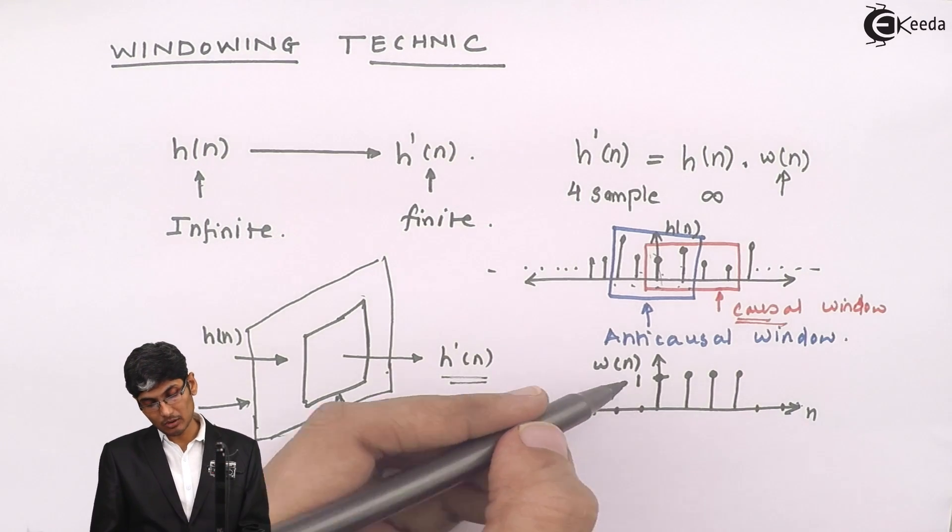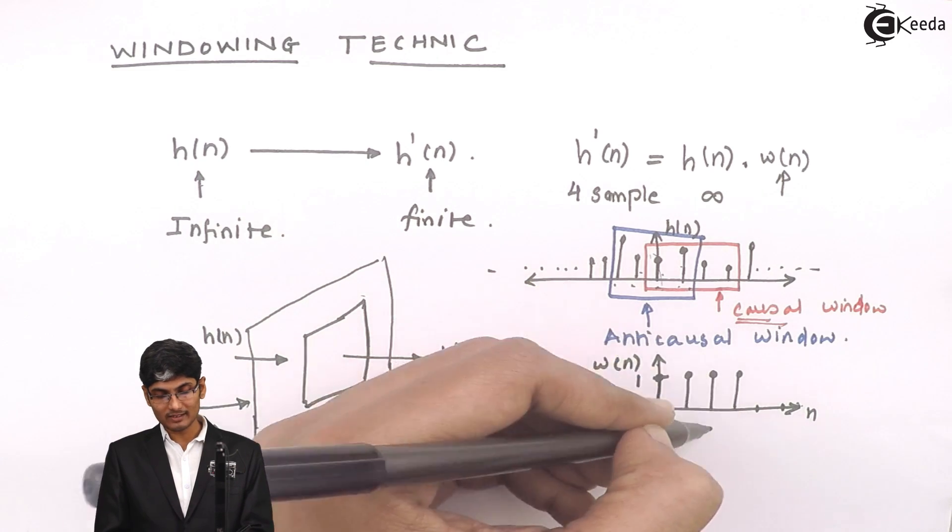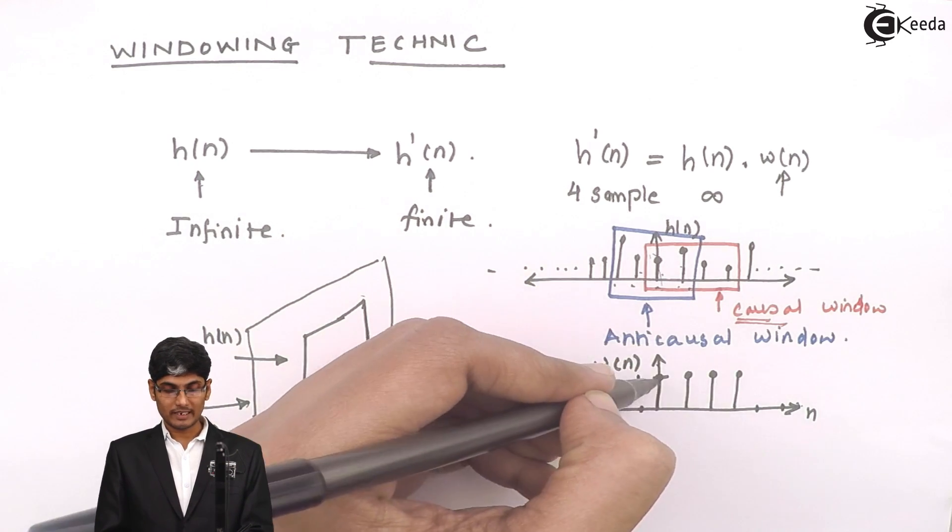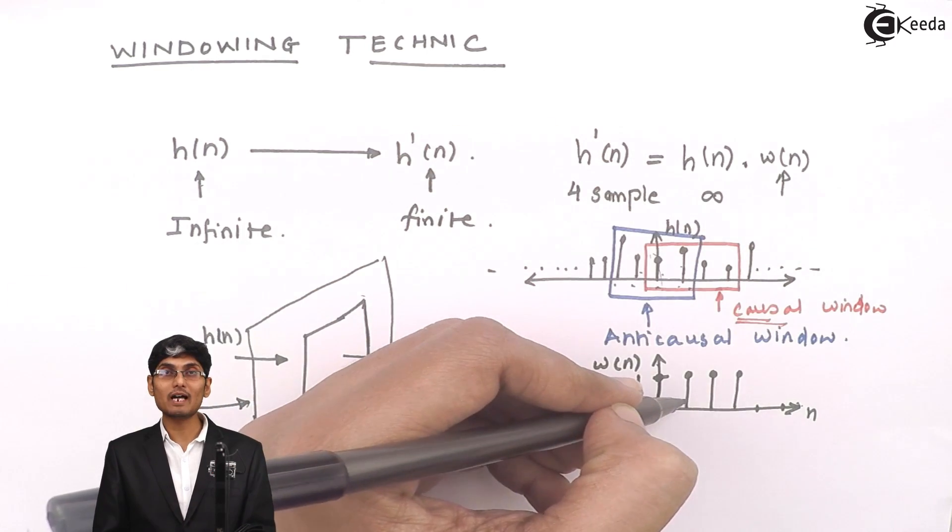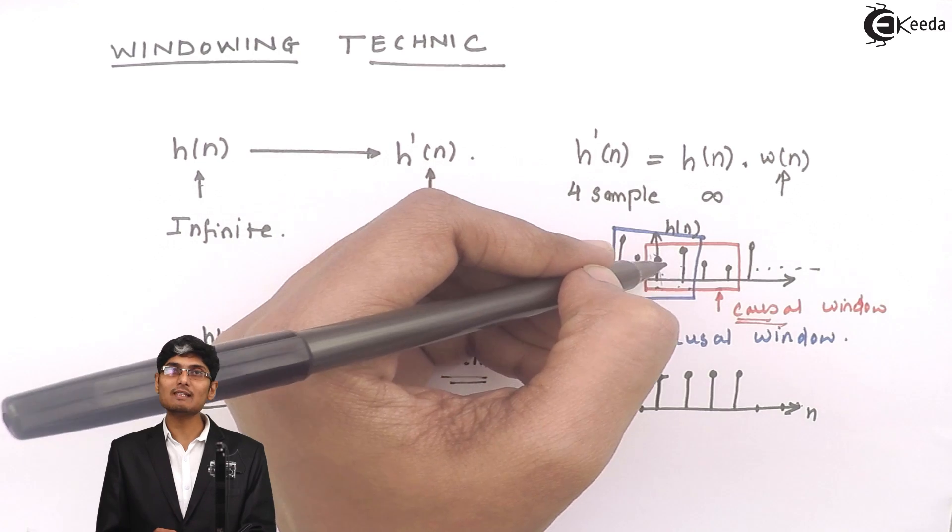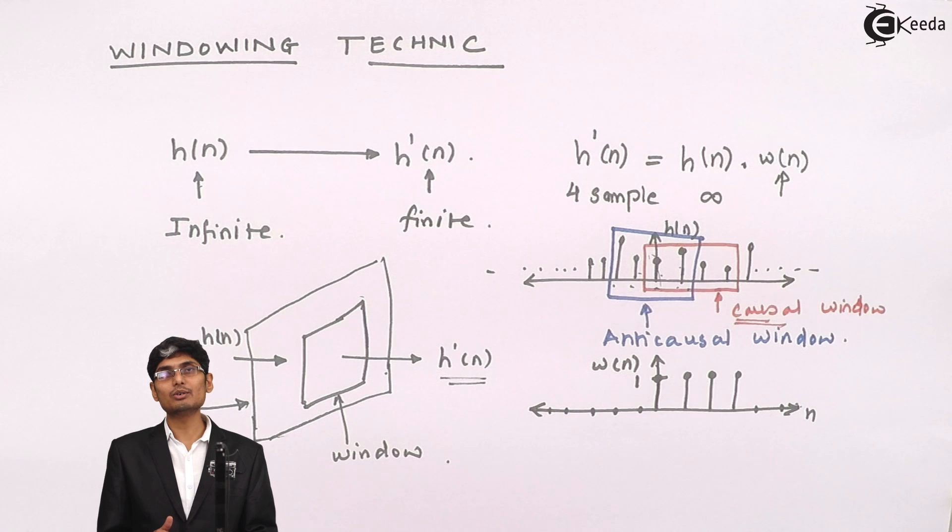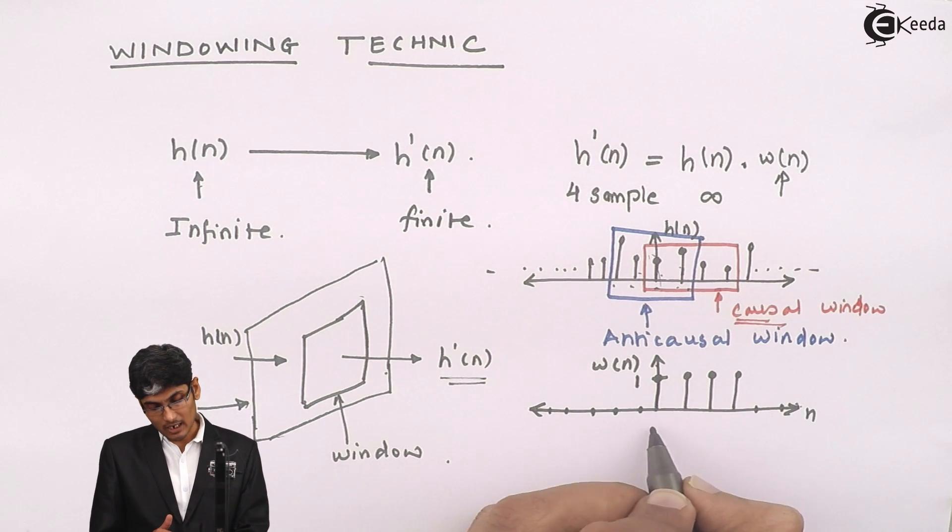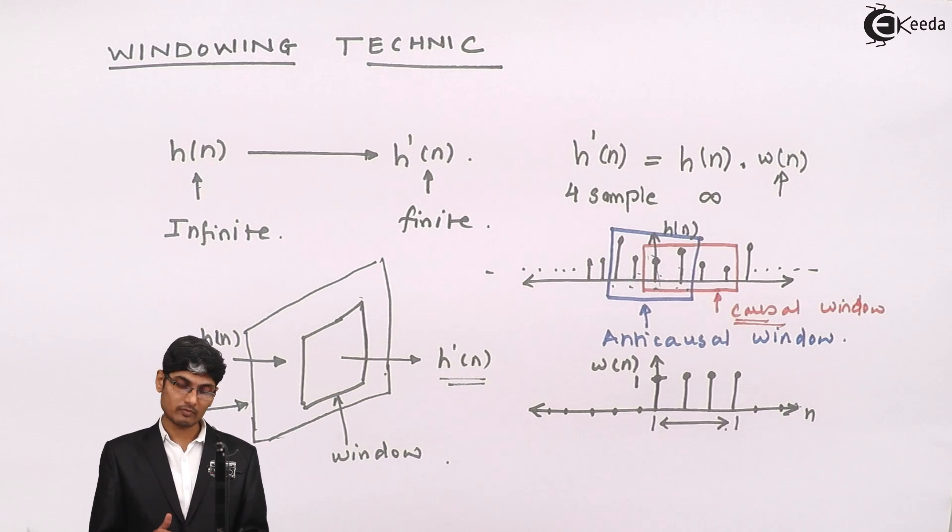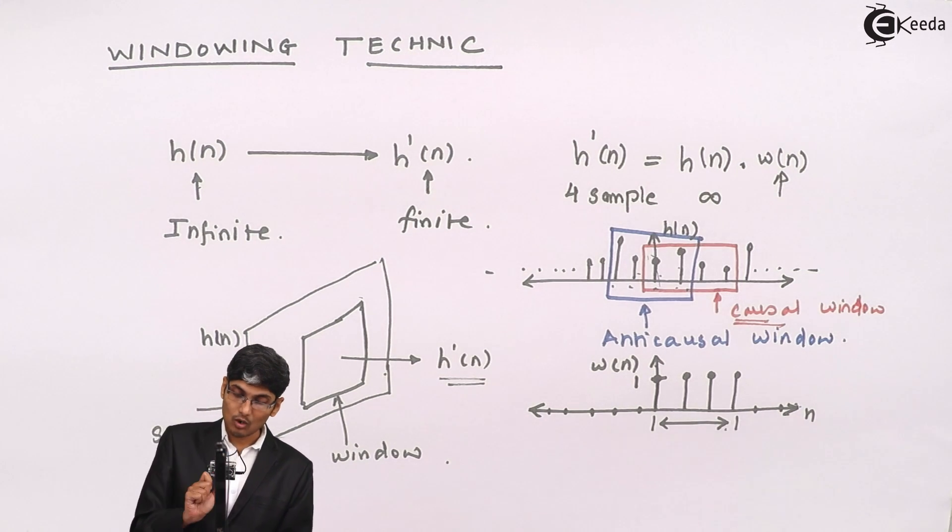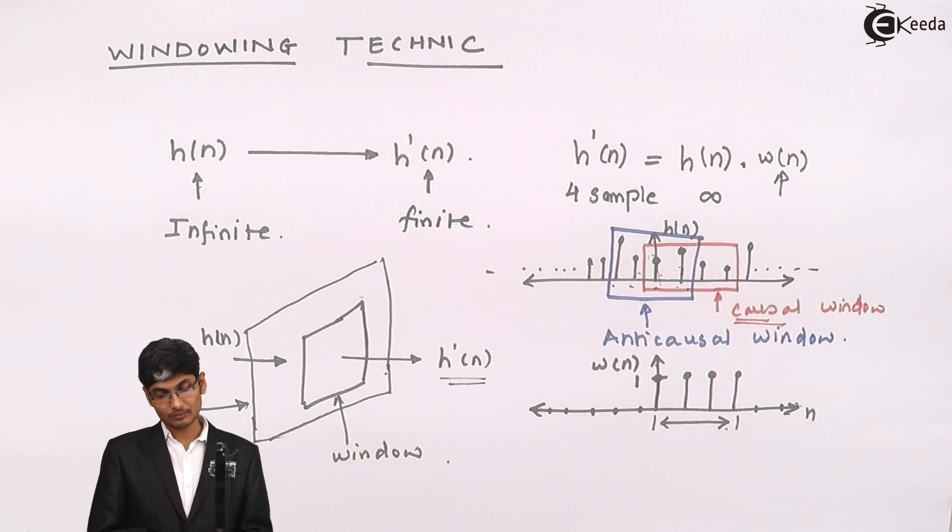Now, I multiply this w of n with h of n, what will happen? Only this 4 samples will get multiplied over here and will result into this answer because I am multiplying by 1, the height of these samples will be as it is, rest all the samples are multiplied by 0. They will ultimately be brought to 0. I opened this much of window. This is the size of the opening and this is the screen through which the samples are not passed.